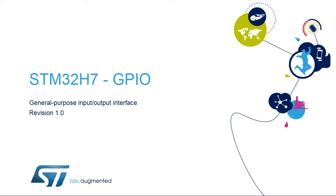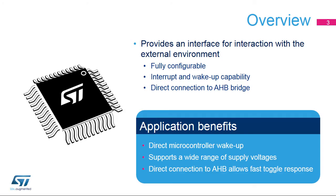Hello and welcome to this presentation of the STM32 General Purpose I.O. Interface. It covers the General Purpose Input and Output Interface and how it allows connectivity to the environment around the STM32 microcontroller. The General Purpose I.O. pins of STM32 products provide an interface with the external environment. This configurable interface is used by the MCU as well as other embedded peripherals to interface with both digital and analog signals.